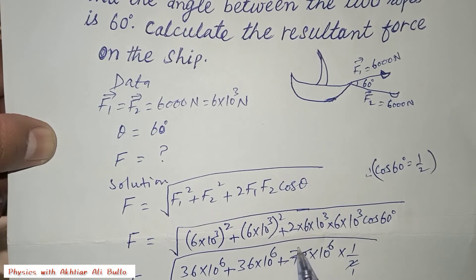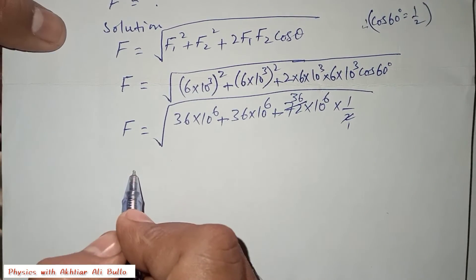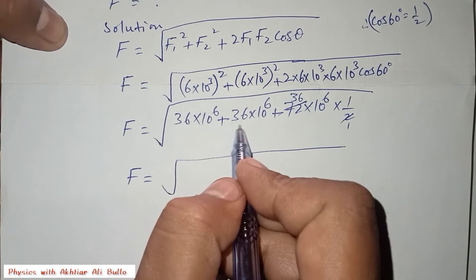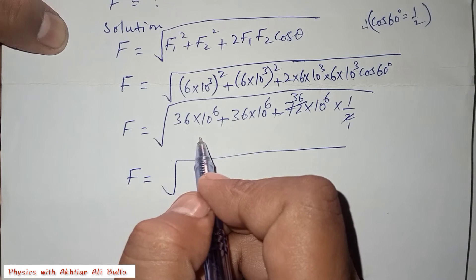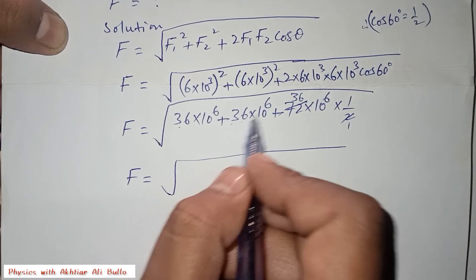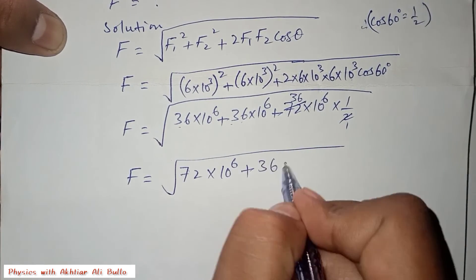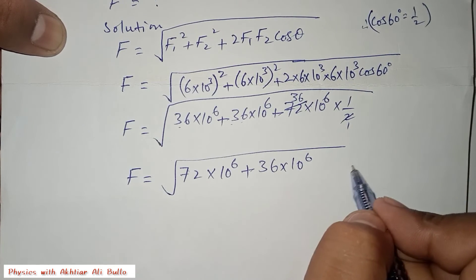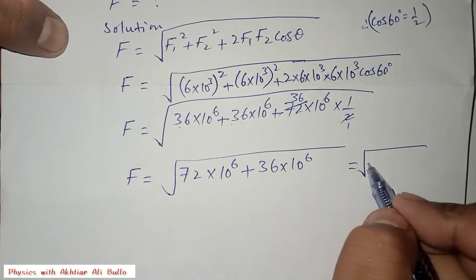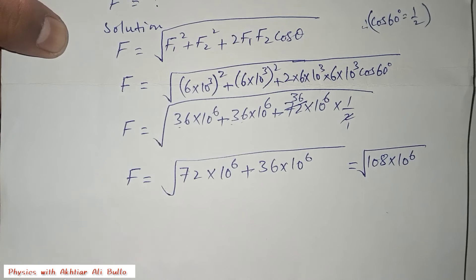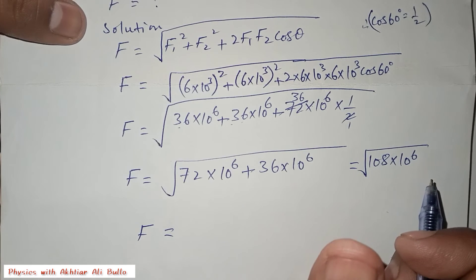So the expression under the root becomes: 36 × 10⁶ plus 36 × 10⁶ plus 36 × 10⁶. Since all terms share the same power of 10, we add the coefficients: 36 + 36 + 36 = 108. Therefore F equals the square root of 108 × 10⁶.